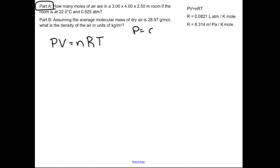It says how many moles of air are in a 3 by 4 by 2.5 meter room if the room is at 22 degrees Celsius and 0.925 atm. So the key to any problem like this is just staying organized. Here's the equation I'm going to use. I need to pay attention to the quantities that I'm plugging in, and I really need to pay attention to the units.